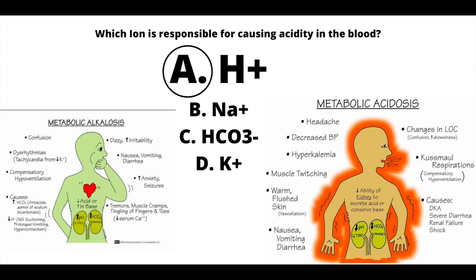Hydrogen causes acidity in the blood while bicarbonate does the exact opposite — it causes alkalinity. Both ions work together to create a balanced pH in your body. The pH scale is from 1 to 14: 1 to 6.9 being acidic, 7 being neutral, and 7.1 to 14 being alkaline. The normal pH of blood is between 7.35 and 7.45. If blood pH becomes lower than 7.35 — too acidic, too many hydrogen ions — this is referred to as metabolic acidosis. If the pH goes over 7.45, the blood is too alkaline with too much bicarbonate, and this is called metabolic alkalosis.